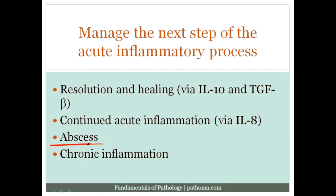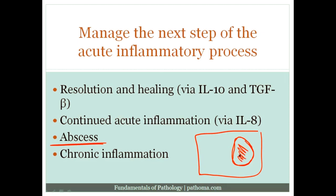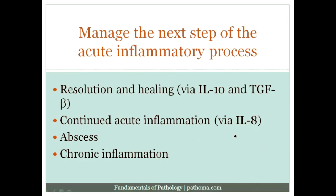Another possibility is that macrophages sense that an organism needs to be walled off to protect the rest of the host and can create an abscess. An abscess is an area of fibrosis — the macrophages create a wall of fibrosis around the area of infection so that the inflammation gets trapped within that space. An abscess is basically a walled-off area of acute inflammation.